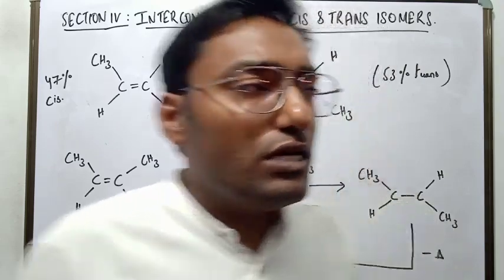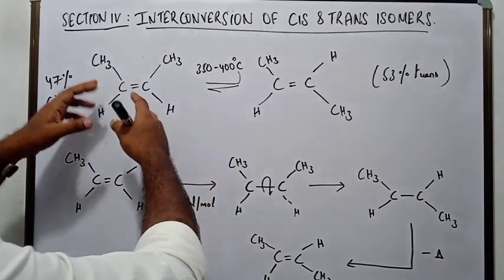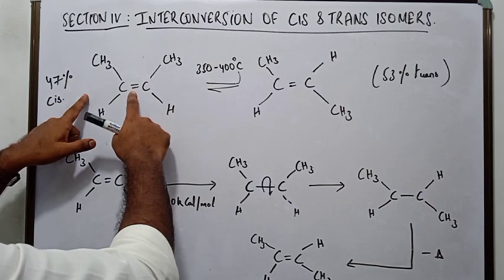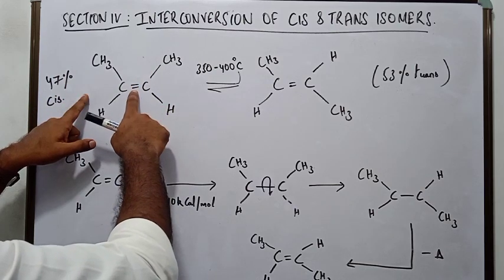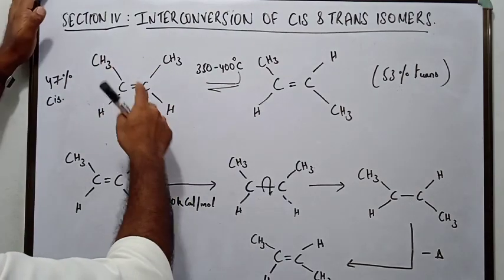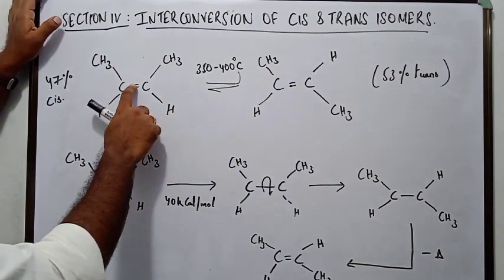Why? Because the conversion of cis - for illustration we have taken cis-2-butene - for this conversion to trans-2-butene, what has to be achieved? First of all, this double bond has to be cleaved.